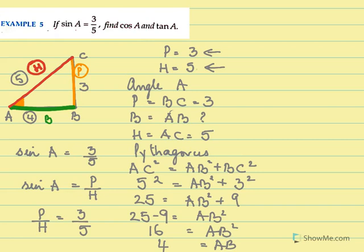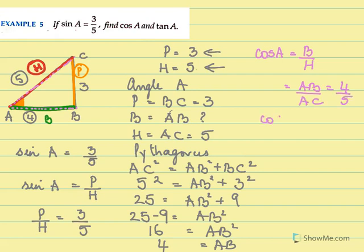We have to find the value of cos A. Now for cos A, cos is base over hypotenuse. For A, we've seen that the base is AB, which is equal to 4. And the hypotenuse is AC. So over AC, and we saw AC is 5. So cos A will be equal to 4 over 5.